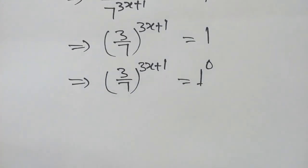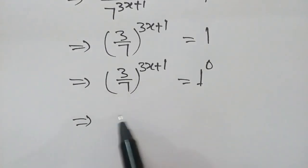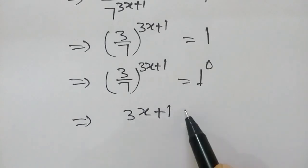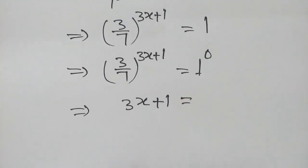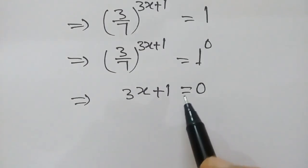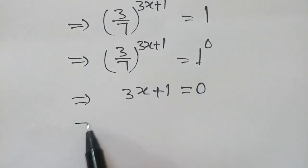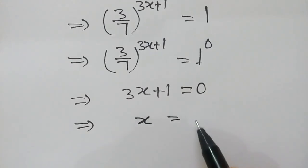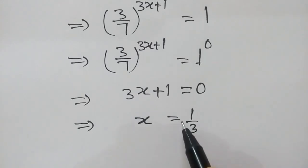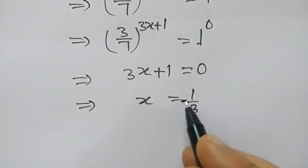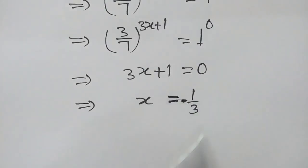We can write, so 3x plus 1 will be equal to 1, so x will be equal to minus 1 over 3.